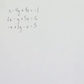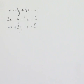Solve the system using matrices. Our first equation is x minus 4y plus 4z equals negative 1. Our second equation is 2x minus y plus 5z equals 6. And our third equation is negative x plus 3y minus z equals 5.